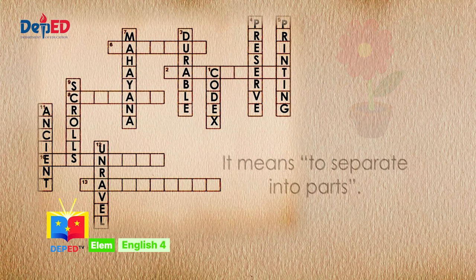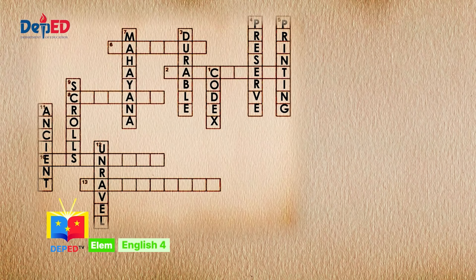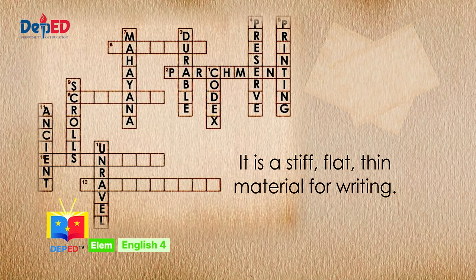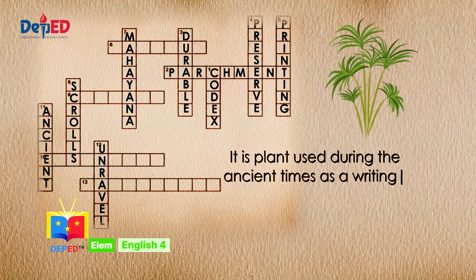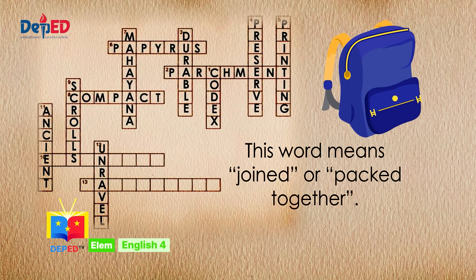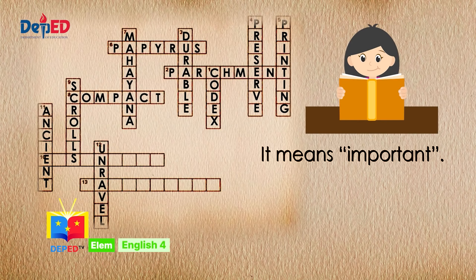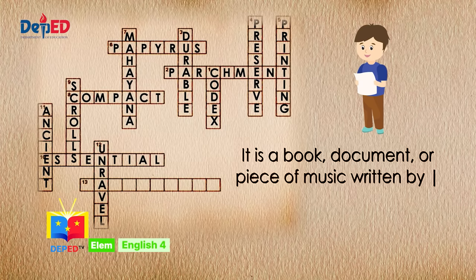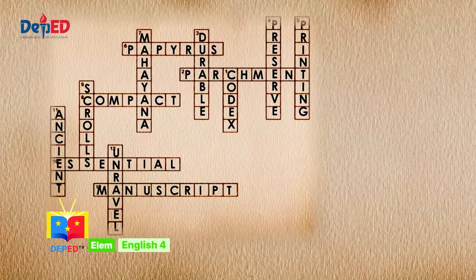How are your scores going so far, kids? Now let's do across. Number two: the stiff, flat, thin material used for writing is called parchment. Number six: the plant used in ancient times as the writing surface is called papyrus. Number eight: the word which means joined or packed together is compact. Number ten: the word important is similar to the word essential. And last but not least, number thirteen: a book, document, or piece of music written by hand is called manuscript.